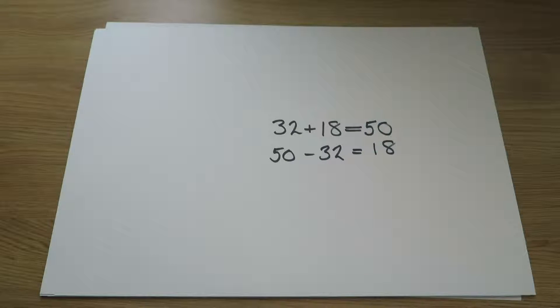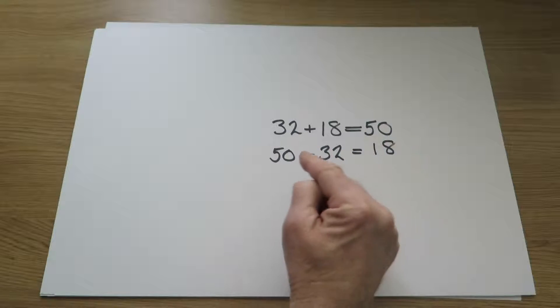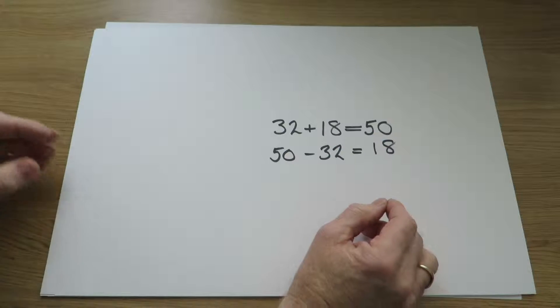In this video I am looking at the process of addition, though of course addition and subtraction are closely related because subtraction is the inverse of addition. So for example, because 32 add 18 equals 50, then 50 take away 32 must be 18. They are inverse operations.